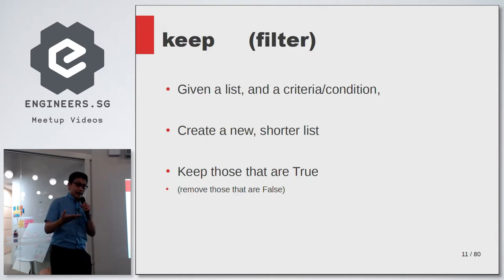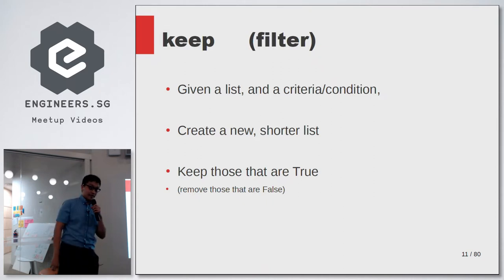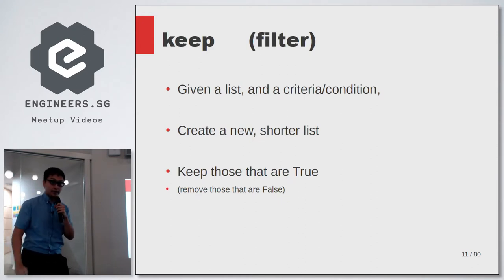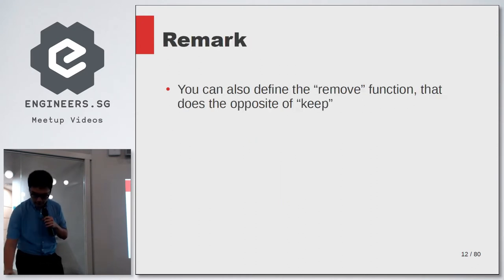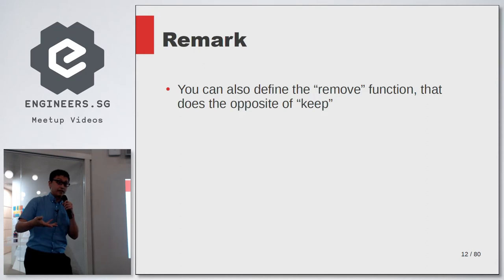Given a list and a condition or criteria, you can create a shorter list such that you keep those that are true and remove those that are false. In Python, you can already do this in Pandas or using list comprehension. I just want to highlight the existence of this concept, and I'll combine it with other concepts to solve problems later. You can also define a remove function that does the exact opposite of keep.